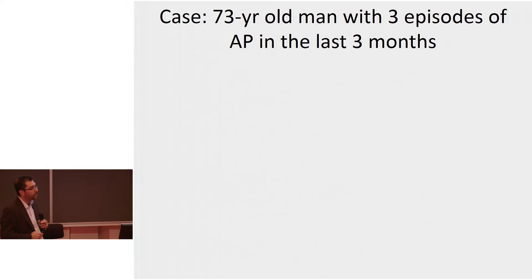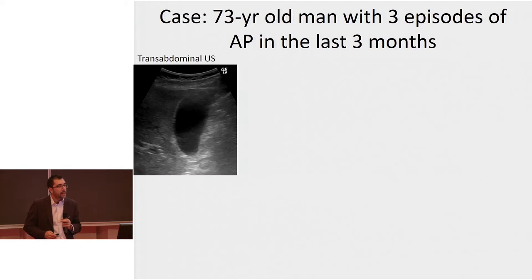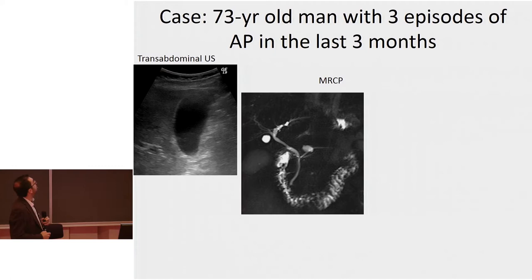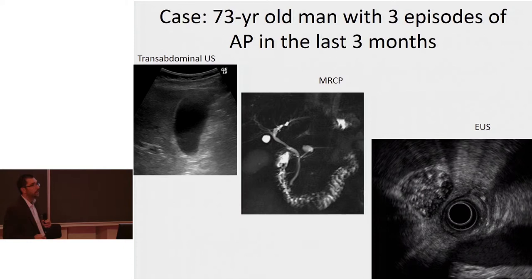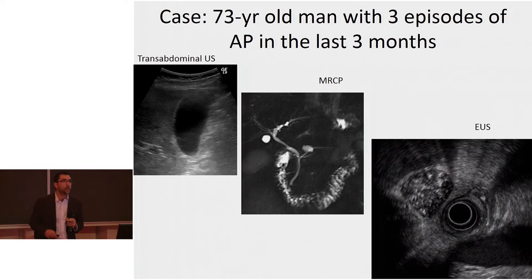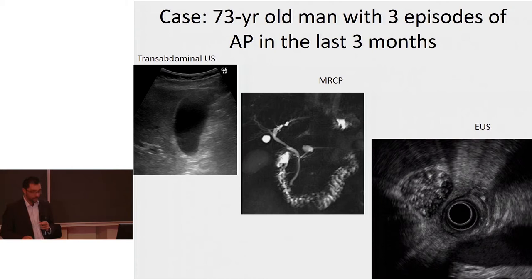Here's an interesting case: a gentleman who presented with three episodes of recurrent acute pancreatitis. He had a negative workup and a transabdominal ultrasound with his gallbladder looking normal. He had an MRCP after a second episode showing only a cystic lesion thought to be an IPMN. He was referred for EUS due to the cystic lesion, and indeed it was a side-branch IPMN, but when we looked at his gallbladder, we found microlithiasis. The patient had a cholecystectomy and had no further episodes. We do see more things on EUS.